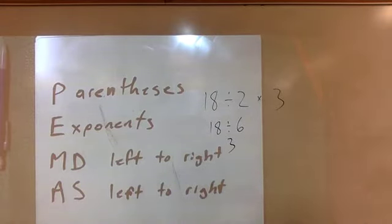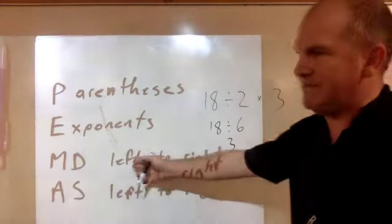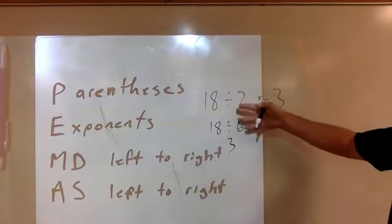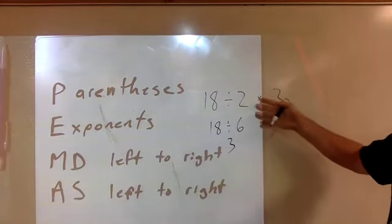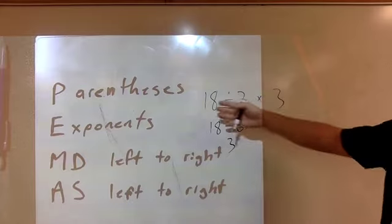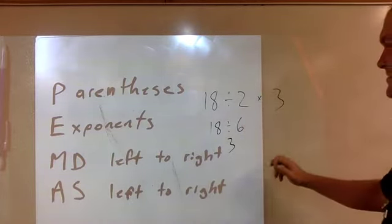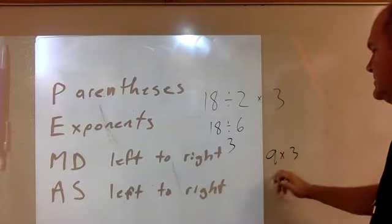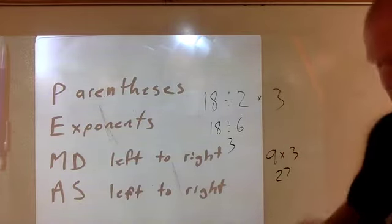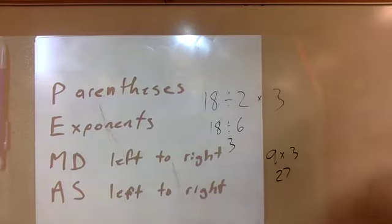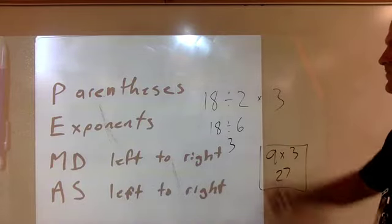But if you just work left to right and consider multiplying and dividing equal to each other, then you get 18 divided by 2 is 9, and 9 times 3 is 27. You get a totally different answer. So which one's right? This one's right.